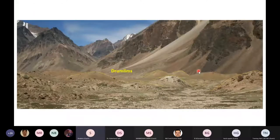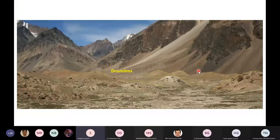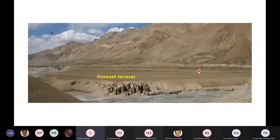Drumlins, which are depositional landforms formed by the modification of the subglacial till by meltwater streams. And outwash terraces, which are very diagnostic expression of major glacial retreats in any mountain valleys.